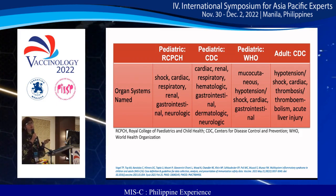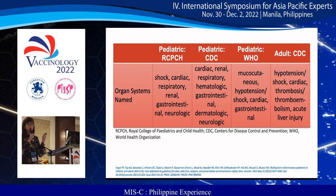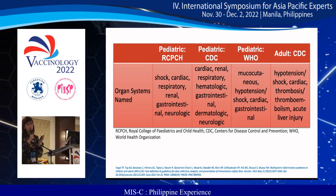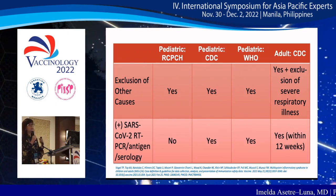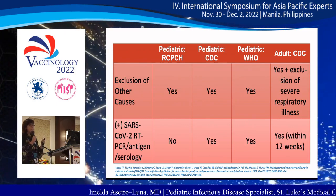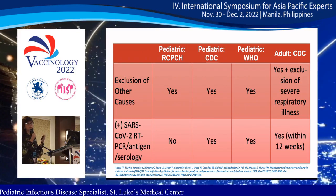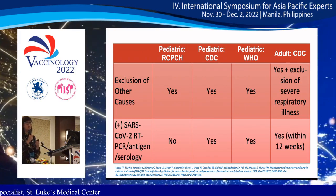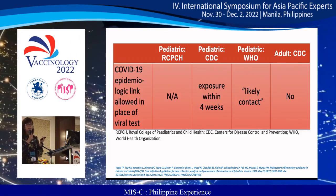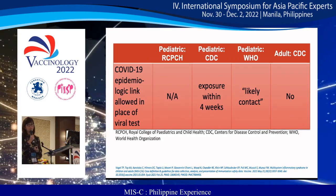The organ systems involved can be gastrointestinal, dermatologic, neurologic, hematologic, and others. All agreed that there should be no other plausible diagnosis explaining the disease. For the CDC and WHO, there should be proof of SARS-CoV-2 infection, whether by PCR, antigen, or serologic testing. In cases where no available test exists, a history of exposure will suffice.